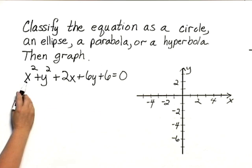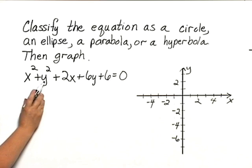We have two squared terms, an x squared and a y squared. That tells us we do not have a parabola. They're added, so that tells us we don't have a hyperbola. The coefficients of the x squared and y squared are the same. That tells us we have a circle.